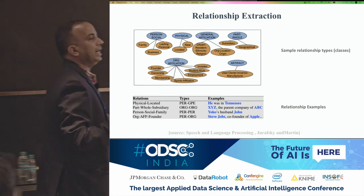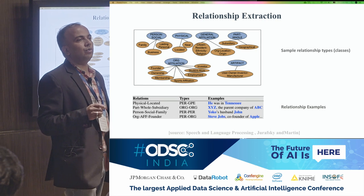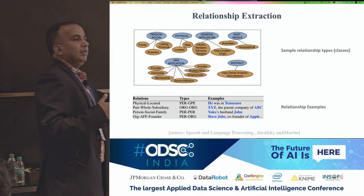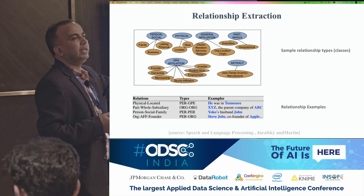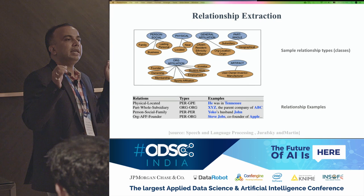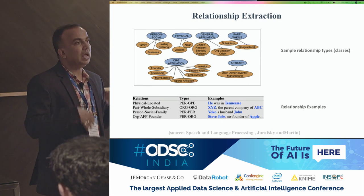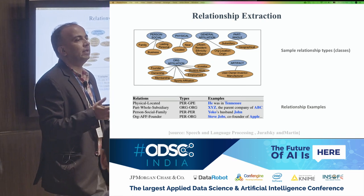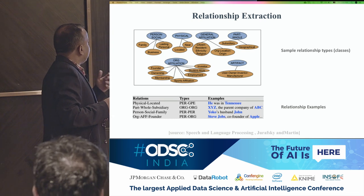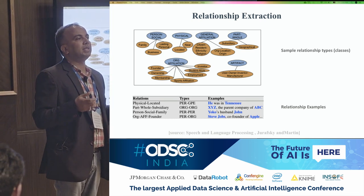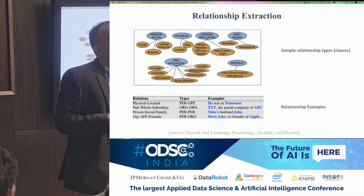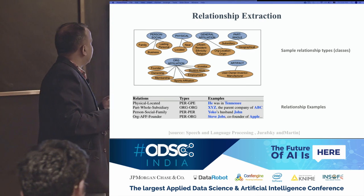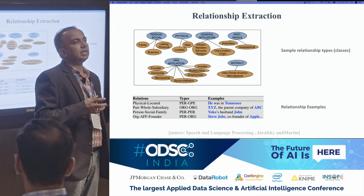Once you have done named entity recognition and identified the entities in your text, the next task is to identify the relationship between those entities. This becomes slightly more complex. The first task was just to take proper nouns and classify them. Now, if there are two entities in a sentence, can you identify the relationship between them? You can treat it as a supervised machine learning problem, but the nuances will vary with the domain.